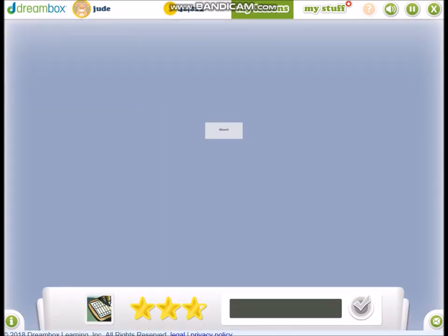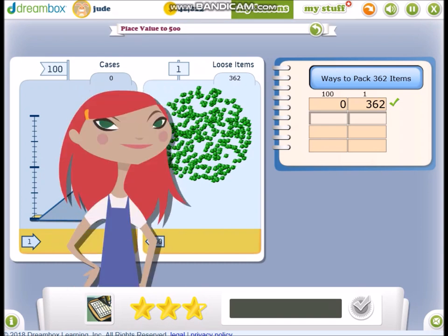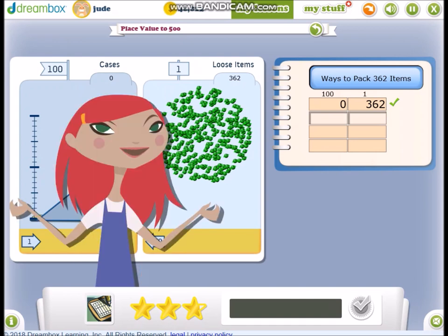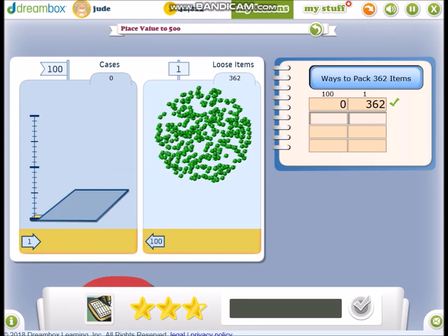Alright. There are different ways to pack 362 green planets, but I need help recording them in the chart. Okay, so here's one way to pack 362 green planets. Find a different way to pack 362 green planets and type it in the chart. Clip!